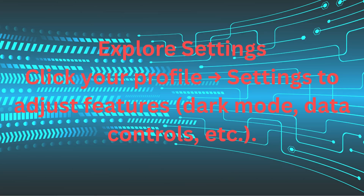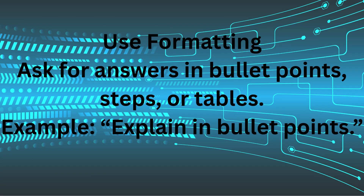Explore settings. Click your profile settings to adjust features like dark mode, data controls, etc. Use formatting — ask for answers in bullet points, steps, or tables. For example, ask ChatGPT to 'Explain in bullet points.'